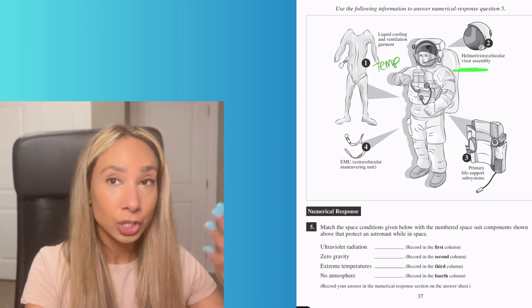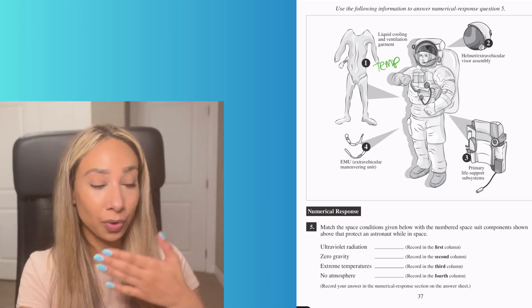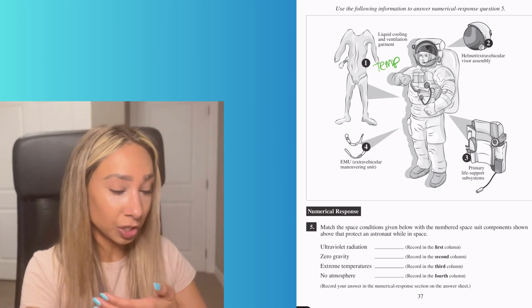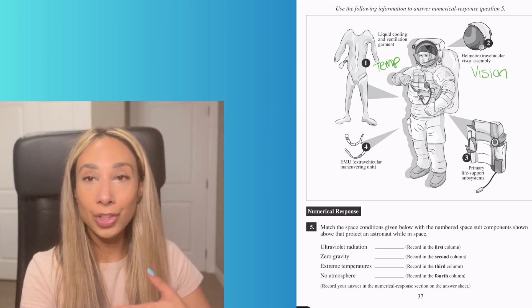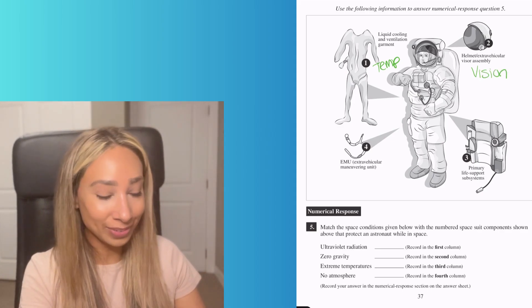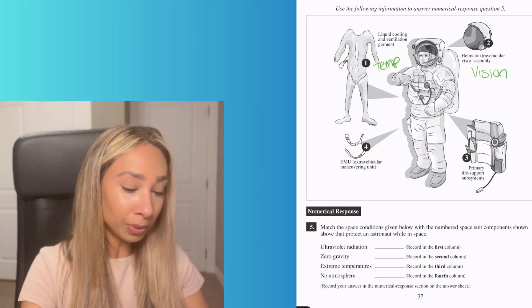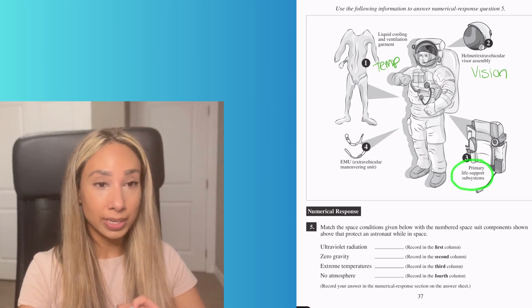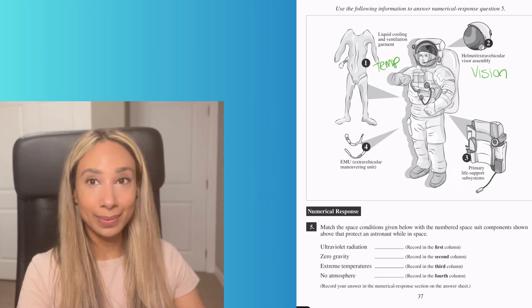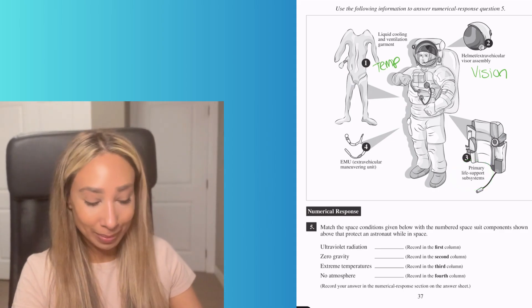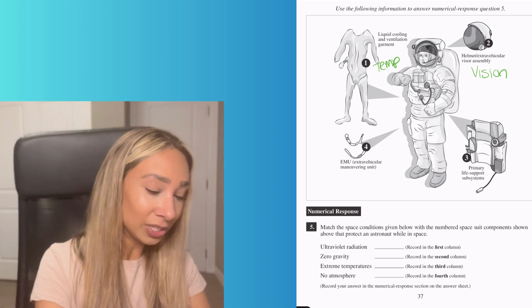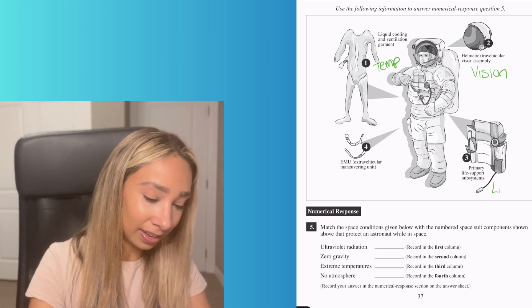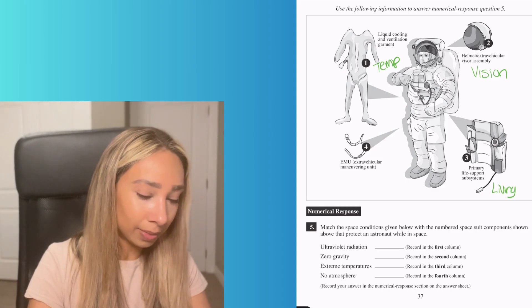Number two is a helmet extravehicular, and it's got a visor. So it's something to not just protect your face but also protect your vision. That one's definitely helpful in making sure what we're seeing isn't harmful to our eyes. Number three, primary life support. That means you're probably not going to be able to breathe or sustain your vital functions. So this one is about living and breathing because that's your primary life support.